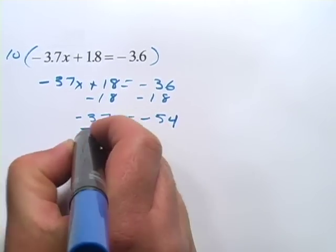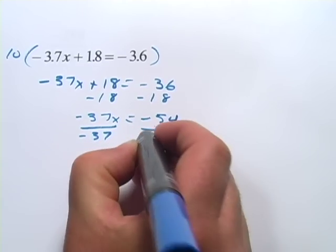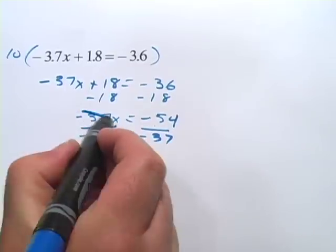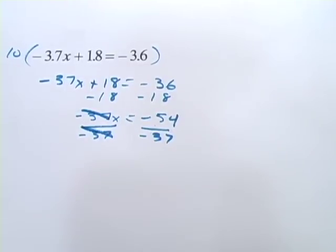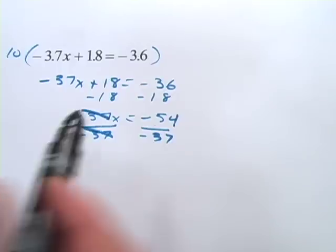And then we're going to just divide by negative 37. My answer is going to be positive because it's a negative divided by a negative, so that's going to be positive. And at this point, you might want to punch it back into your calculator rather than leaving it as a fraction.